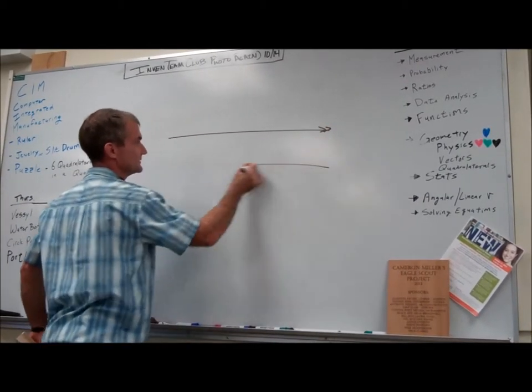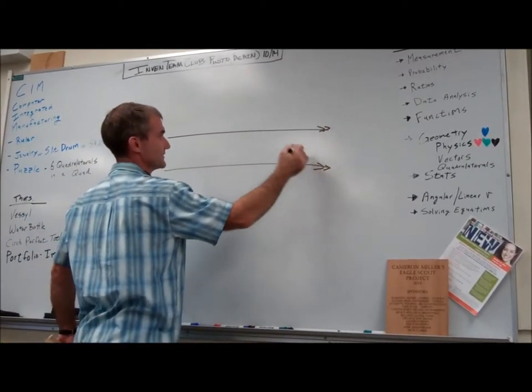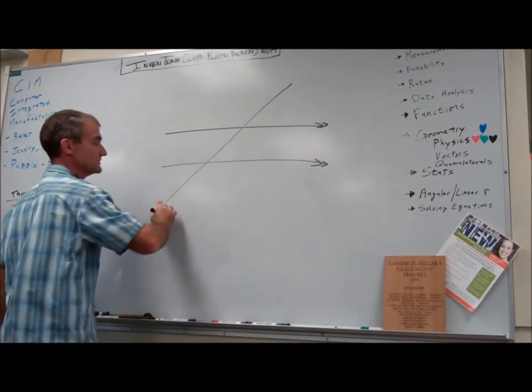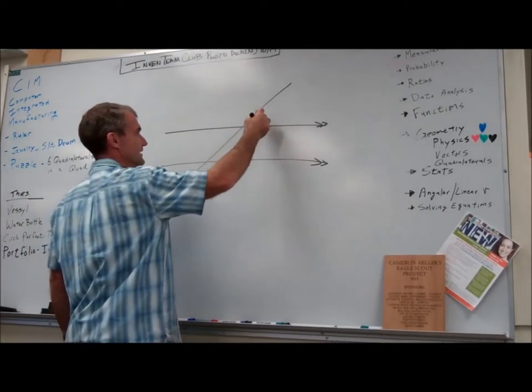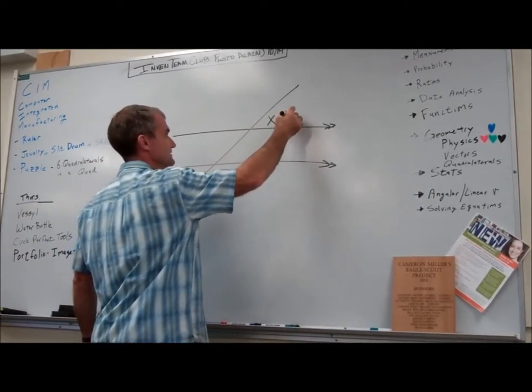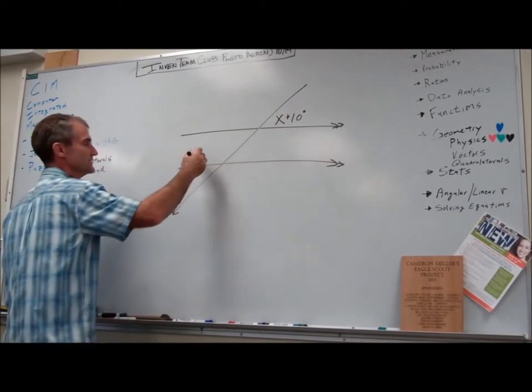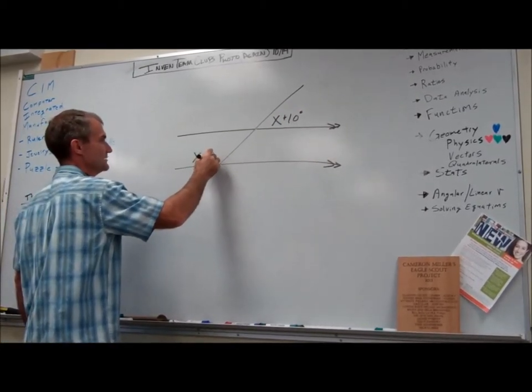arrow, arrow, meaning parallel to this, cut by a transversal. And the measure of this angle right here is x plus 10 degrees. And then the measure of this right here is x plus 80 degrees.